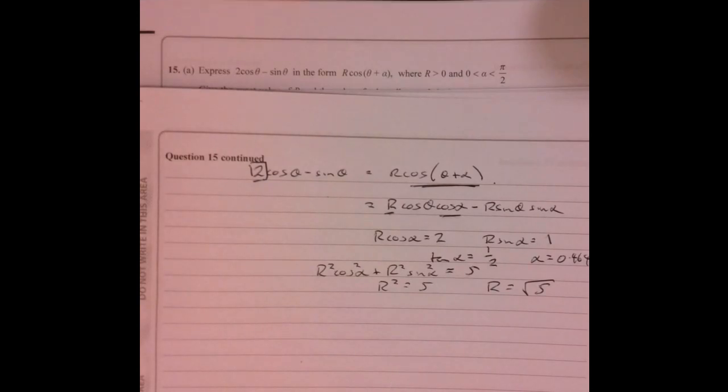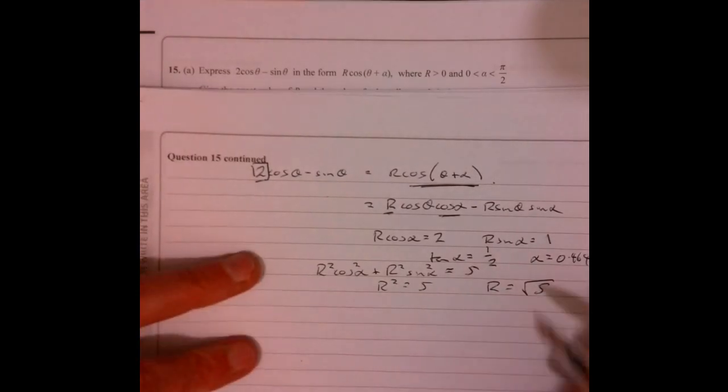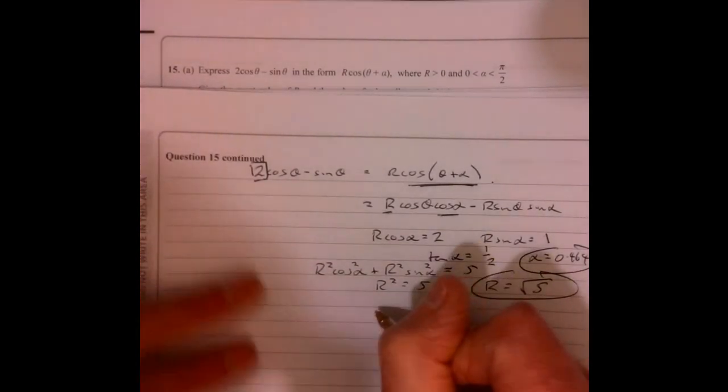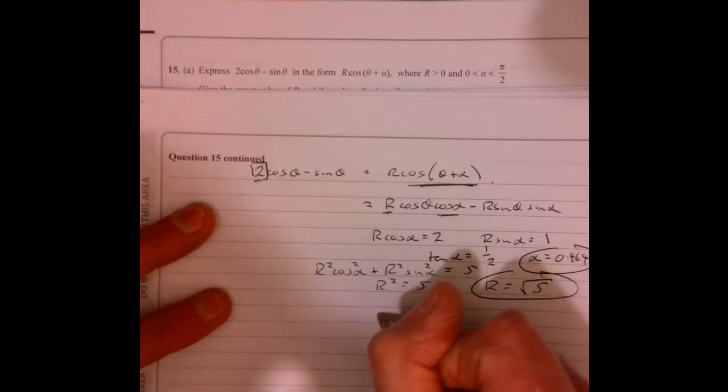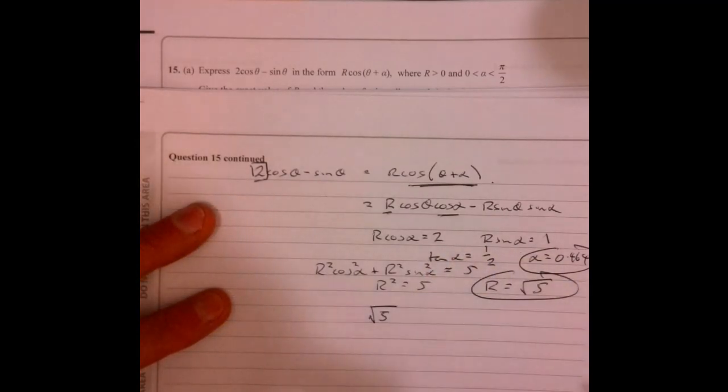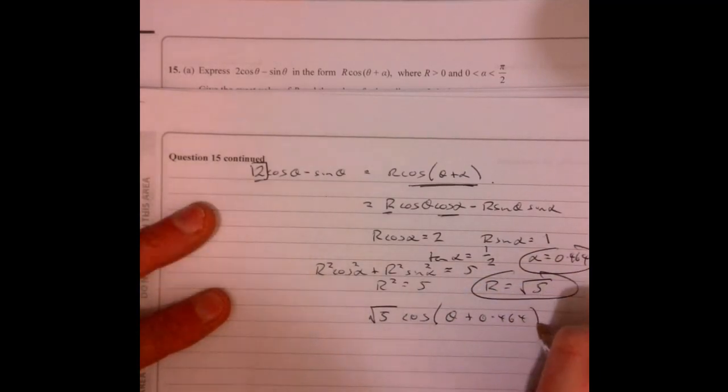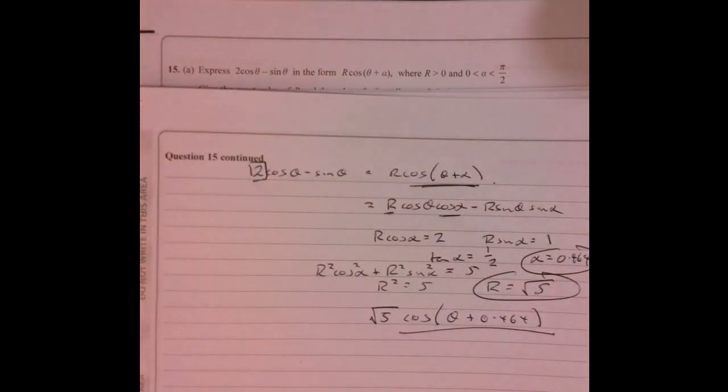So now let's just write down where we are. So we've got that and we've got that there. So this slot is equal to root 5 cos of theta plus 0.464. Now let's go and have a look at the rest of the question.